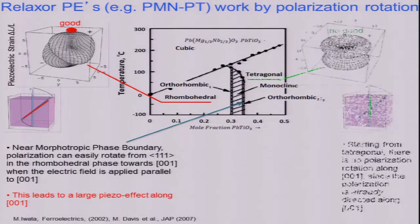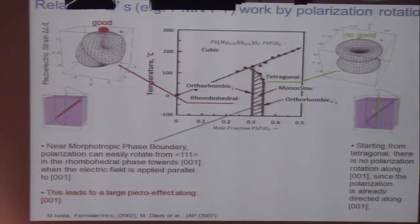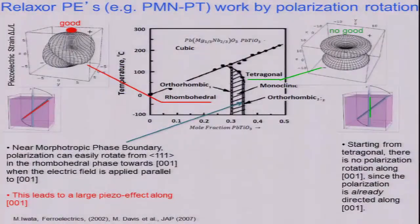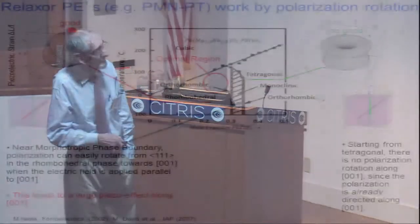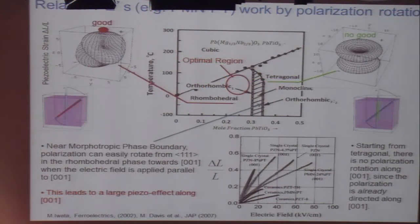If, on the other hand, I go to the tetragonal region the polarization is already pointing along 001, it's very robust to extension so the piezoelectric effect is very small along 001. The place to work is here where the crystal doesn't know exactly whether it's tetragonal or orthorhombic and it's very easy to rotate the polarization and that is the place where we work and that's the discovery of Penn State here.